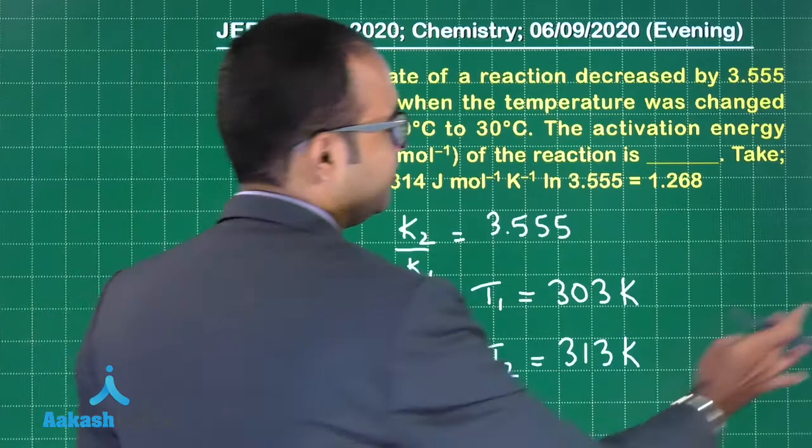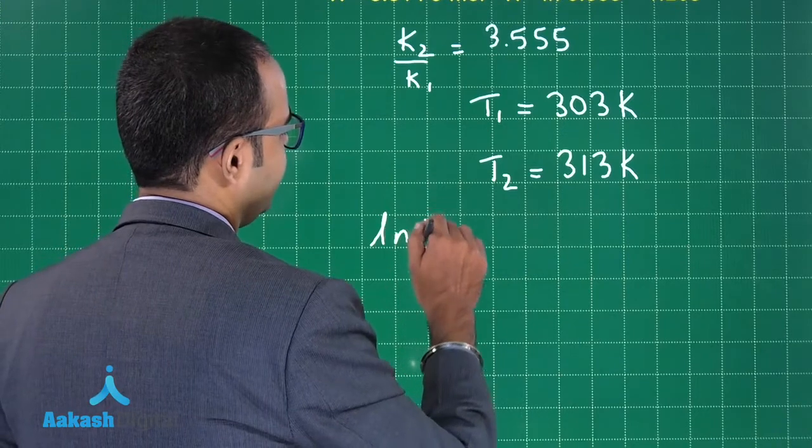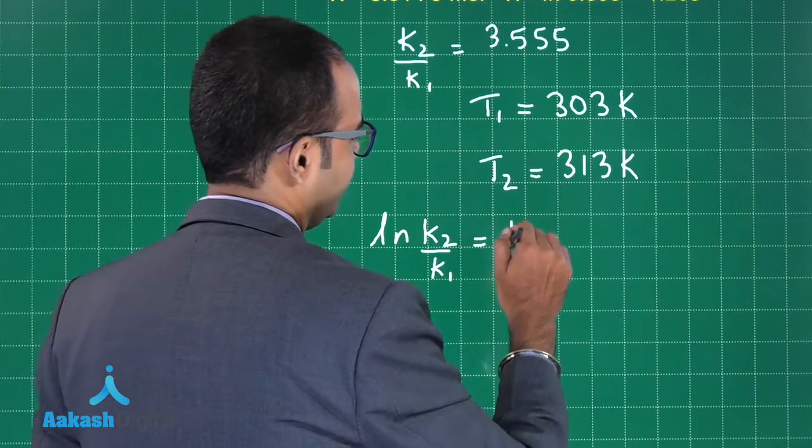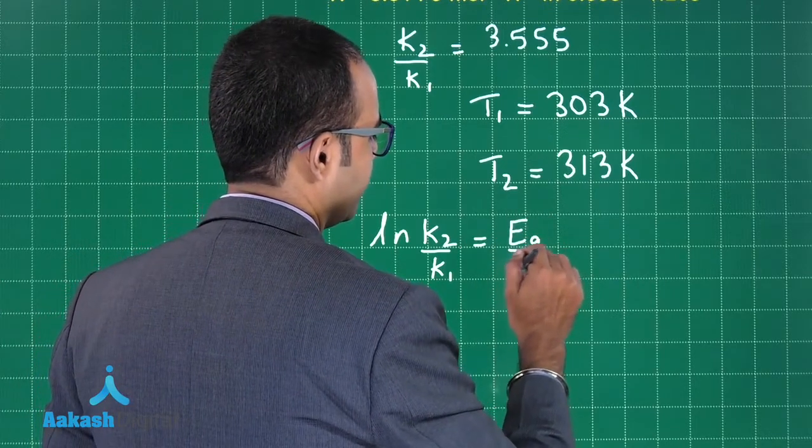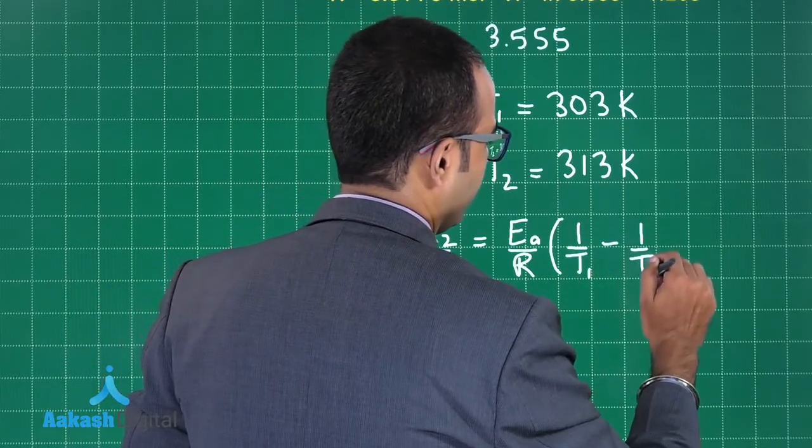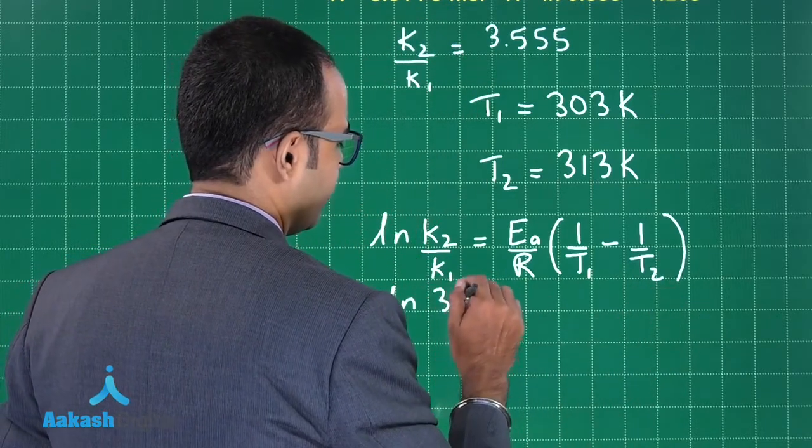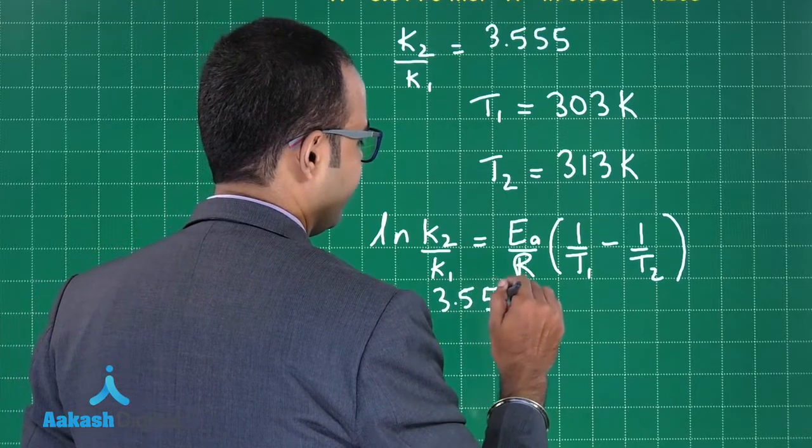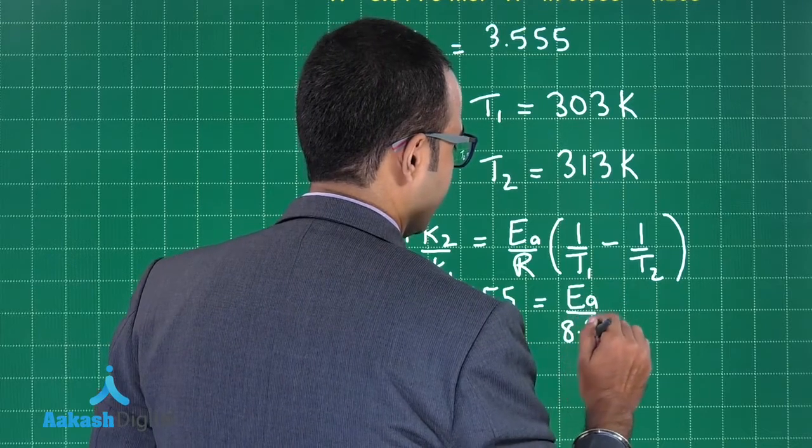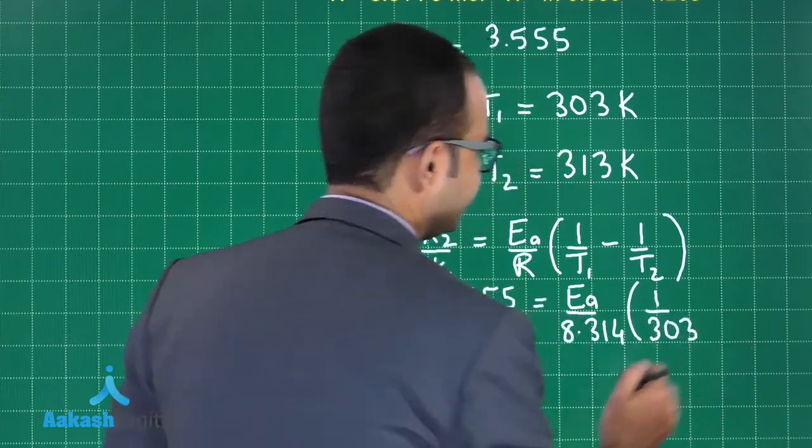Simply substitute them in the equation. What is the equation? ln(K₂/K₁) = Ea/R(1/T₁ - 1/T₂). Let us substitute the values. ln(3.555) = Ea/8.314(1/303 - 1/313).